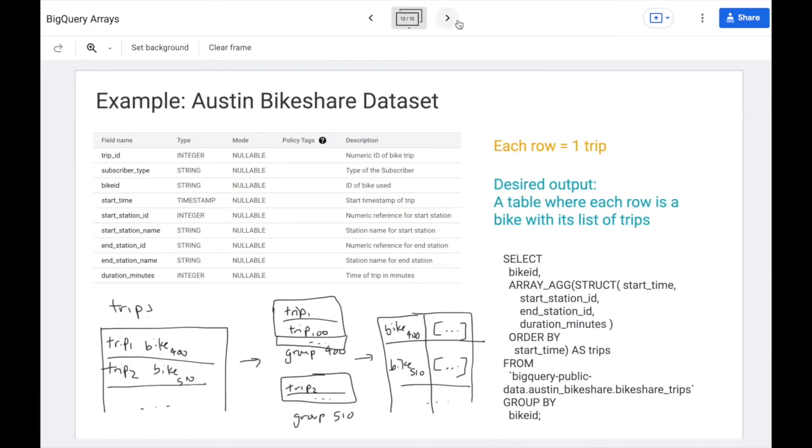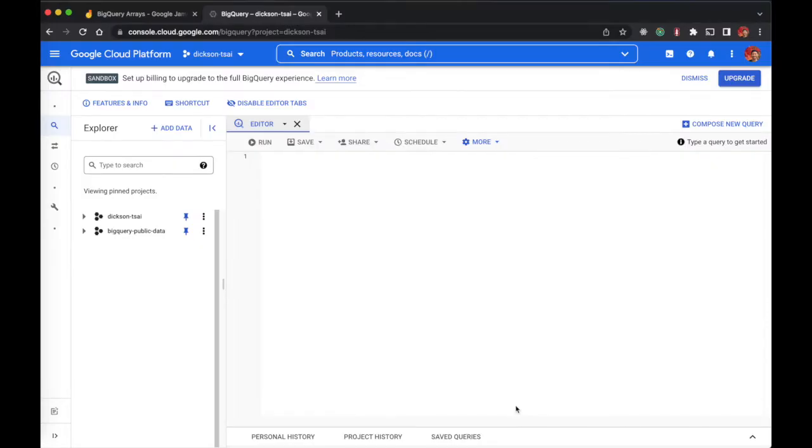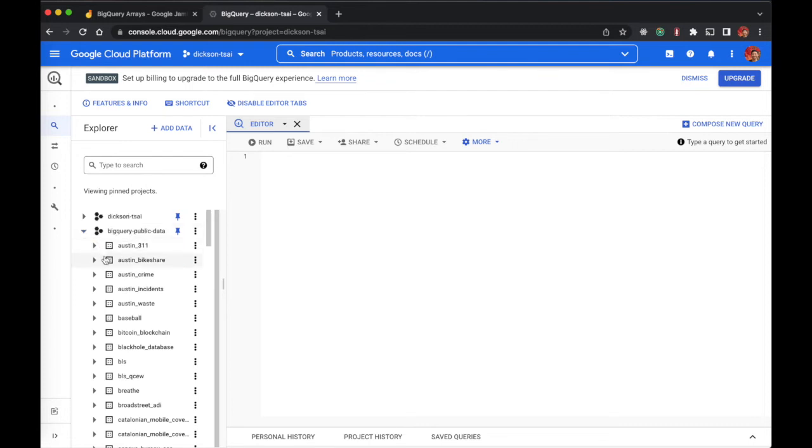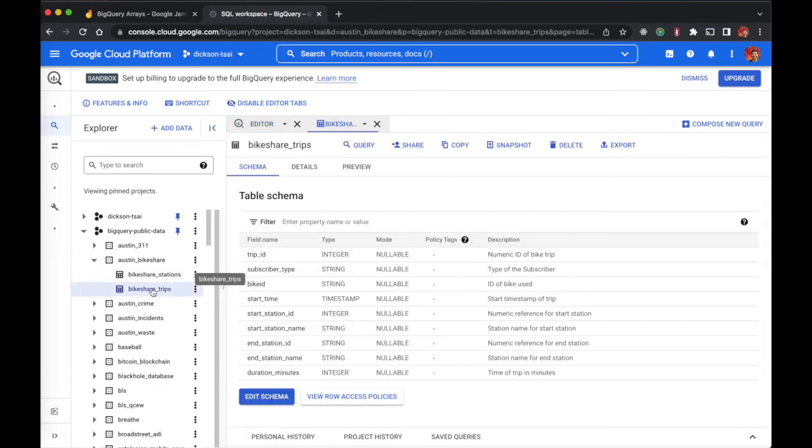All right. So that is everything you need to know roughly about arrays. Let's dive through an example data set. Let's head over to console.cloud.google.com slash BigQuery. This is the BigQuery UI. You can see that BigQuery provides some public data sets to play with. For our example, we're going to look at Austin Bike Share. So there are two tables, Bike Share stations and trips.